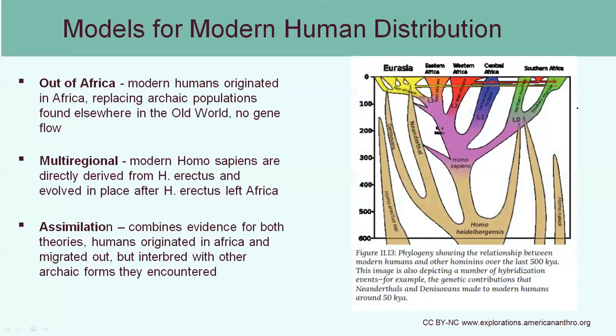The first model for why humans ended up where they are today is the Out of Africa theory. This explains that modern humans originated in Africa, and as they migrated out they replaced any other genus Homo that existed there, with no gene flow between any of these groups or with the original ancestors in Africa.